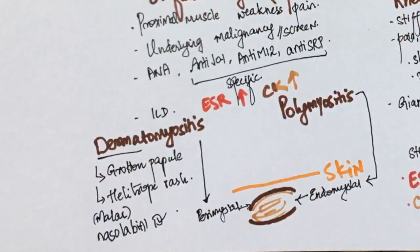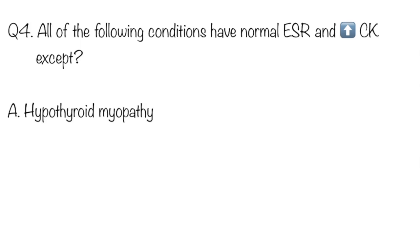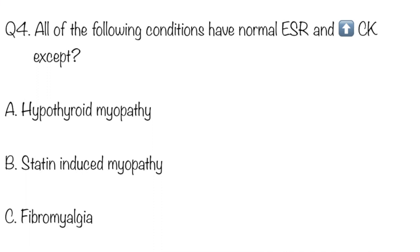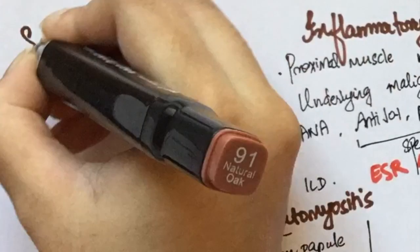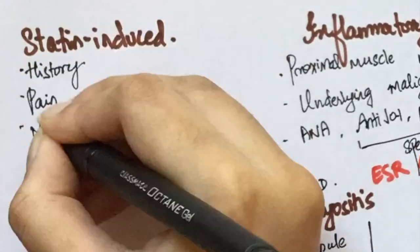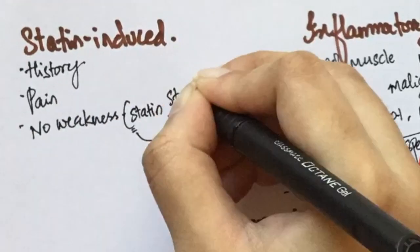Question number four: all of the following conditions have normal ESR and high CK except — Option A: hypothyroid myopathy. Option B: statin-induced myopathy. Option C: fibromyalgia. The answer is fibromyalgia. Before we get to it, let's speak about statin-induced myopathy. These patients are likely to present with muscle pain but no muscle weakness.